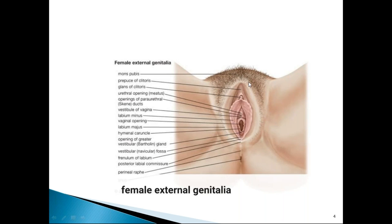The outer surface of labia majora is covered with hair follicles, and mons pubis and outer surface of labia majora also consist of sweat glands and sebaceous glands. Therefore they are more prone to boils, furuncles, and sebaceous cysts. The inner surface of labia majora is moist, pink, and devoid of any hair follicles.